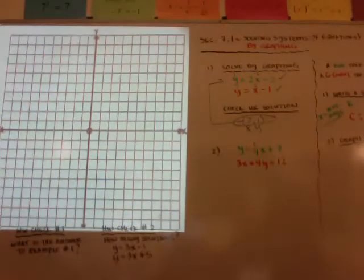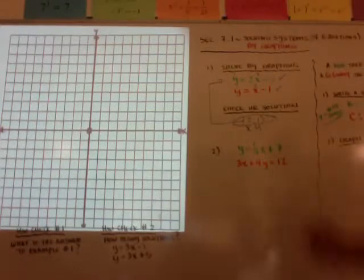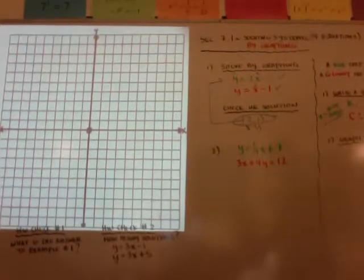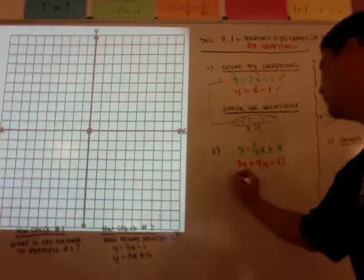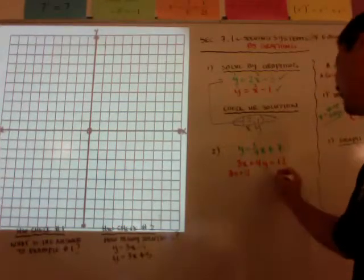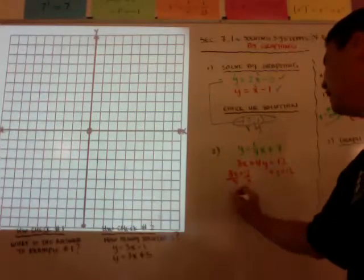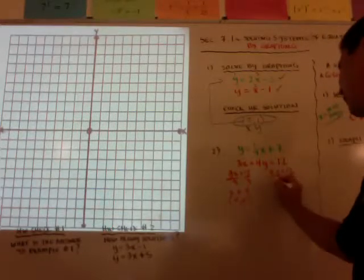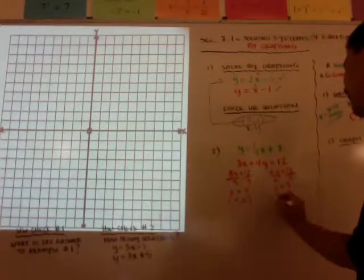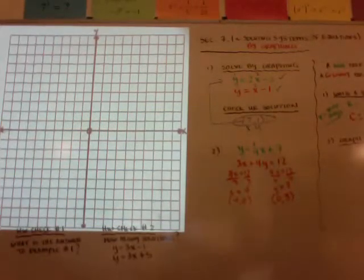Here is another system of equations to graph. The first equation is already in slope-intercept form: y = one-fourth x plus 7. The red equation needs to be converted. Since it's in standard form, I'll use x- and y-intercepts. Setting y=0: 3x = 12, so x = 4, giving the point (4, 0). Setting x=0: 4y = 12, so y = 3, giving the point (0, 3). Now I can graph both equations.